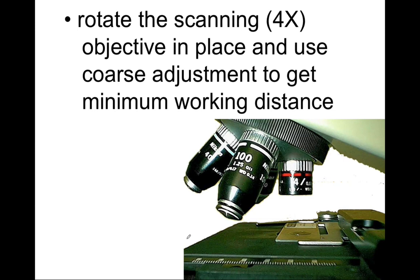Once we have placed the microscope slide on the stage and secured it, it is time to start focusing your microscope slide to the objective lens. You'll look through the ocular lens with your objective lens in place. You always want to start with the scanning objective lens — you never want to start with the high power or the low power objective. Start with the scanning at all times to give yourself the most working distance and make sure your picture is in focus.